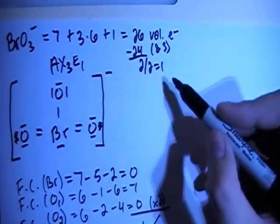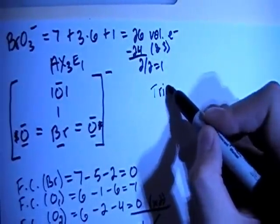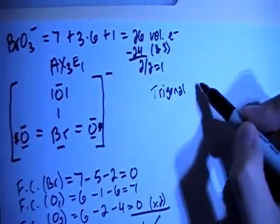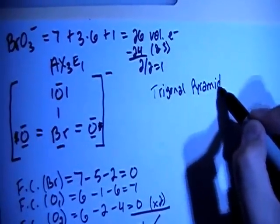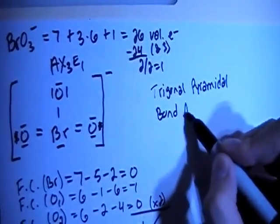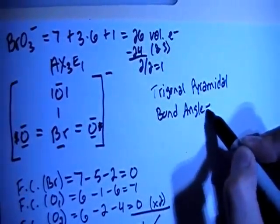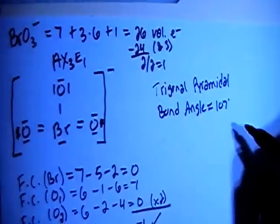All right, so let's go ahead and talk about the shape now. With the AX3E1, this is going to have a trigonal pyramidal shape. And when you have that shape, the bond angles are going to be approximately equal to 107 degrees.